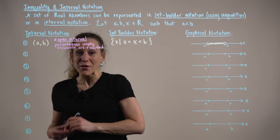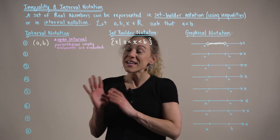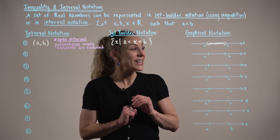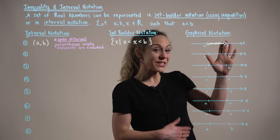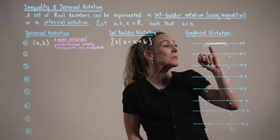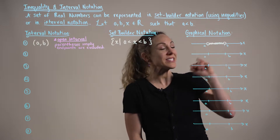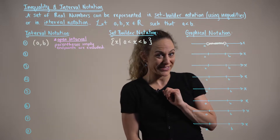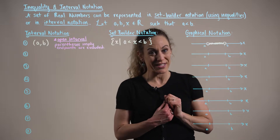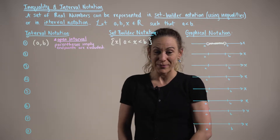An open interval implies that the endpoints of that interval are excluded. We can see this with our graphical notation — observe that we have open dots at the endpoints, implying that x can get infinitely close to these values but will never equal them.